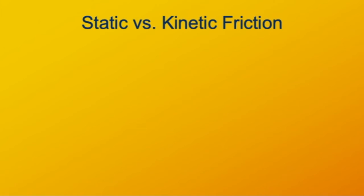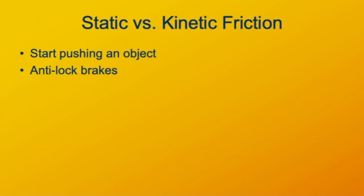Let's explore the distinction between kinetic and static friction and how it relates to everyday experiences. When you start pushing a box or crate on the floor, you have to push quite hard to get it started, but once it's moving, it takes less force to keep it going. As alluded to with braking, that's the whole point of anti-lock brakes — they try to keep the wheel from locking up and skidding. Maintaining static friction between the tires and the pavement gives higher friction than allowing a skid.